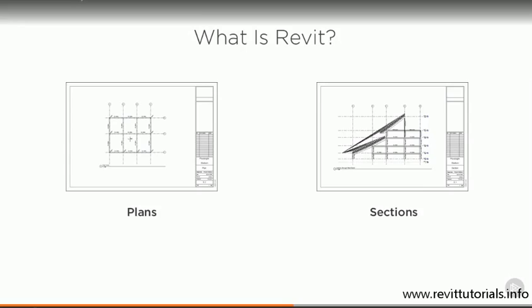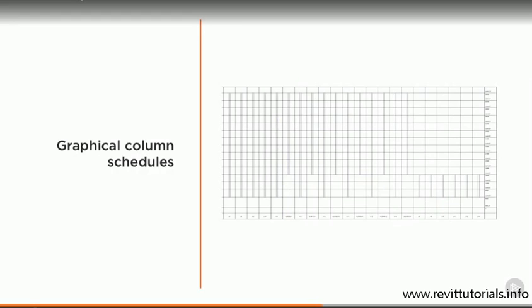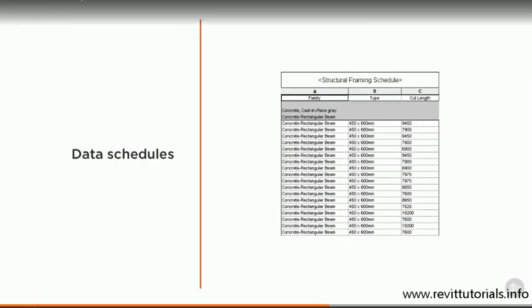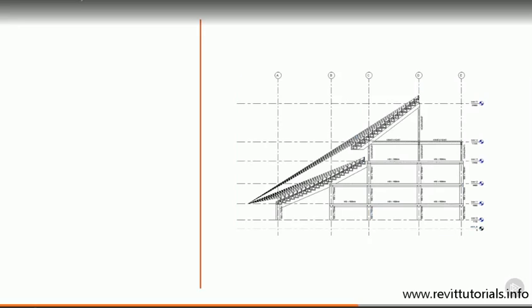But we can also use Revit to add extra information to our models. We can add design data that isn't geometric and won't necessarily be represented with lines and hatching on our plans and sections. We can create graphical column schedules and data schedules of all of the structural framing elements in our project. We can use design options to show different possibilities in our designs, and we can print off sheets showing each option without having to create separate files and duplicating work. We can add information to our building elements through use of keynotes and element parameters, which allow us to streamline how we work and make documentation more efficient.